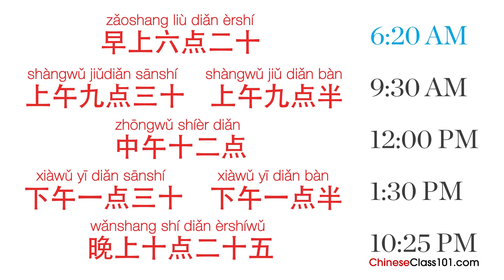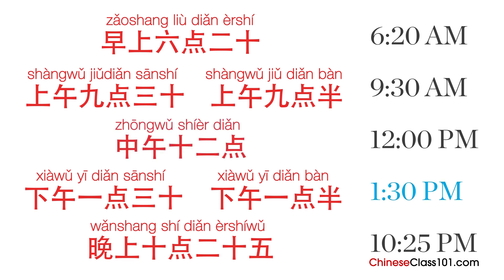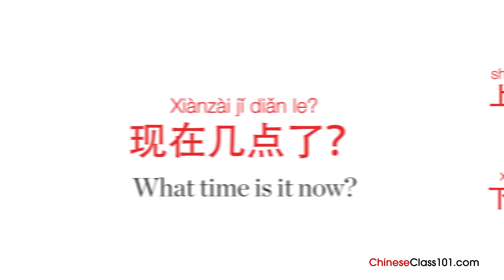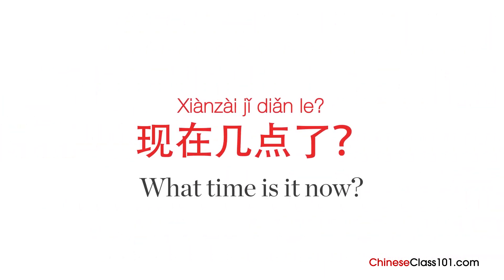6:20 AM — 早上六点二十。 9:30 AM — 上午九点三十, or 上午九点半。 半 here means half. 12 PM — 中午十二点。 1:30 PM — 下午一点三十, or 下午一点半。 10:25 PM — 晚上十点二十五。